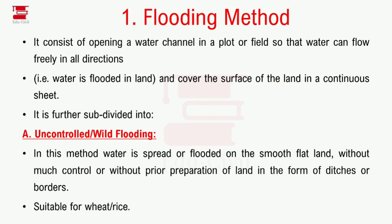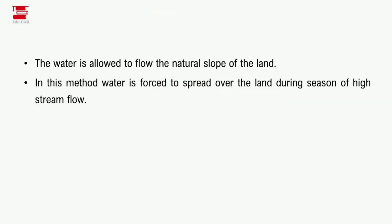In uncontrolled or wild flooding, water is allowed to flow on the natural slope of the land with very little control. In this method, water forces spread over the land during the season of high stream flow — that is, when stream flow is very high. This is wild flooding or uncontrolled flooding.